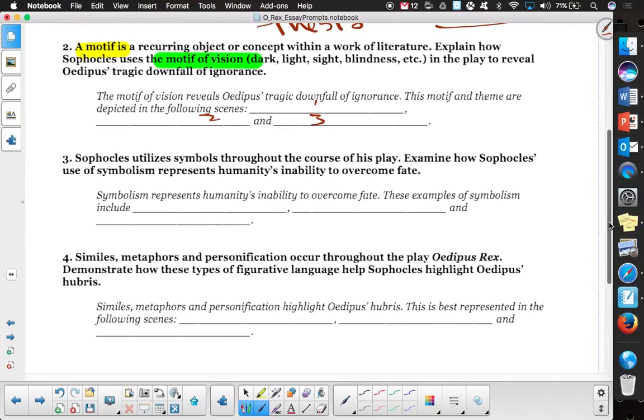If you go with the third one, Sophocles utilizes symbols throughout the course of his play. So now you're going with symbols, and instead of looking at ignorance or wisdom and things like that, the inability to overcome fate. Symbolism represents humanity's inability to overcome fate. Your thesis, these examples of symbolism include one, two, and three. Can anyone think of what any symbols would be that you could use in the play? Because now you need specific examples of symbols, something that means one thing, but also has an abstract kind of meaning to it.